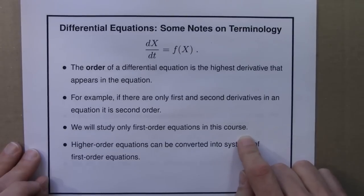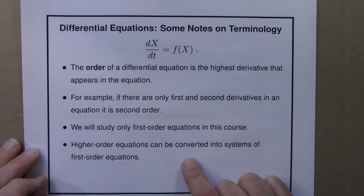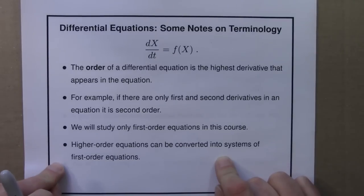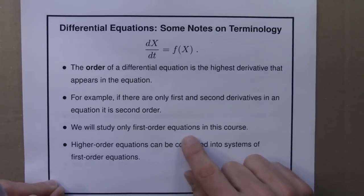At first, this might seem like a limitation, because there's some very important second order equations. Newton's law of motion, perhaps the most important for mechanics and chaos, is a second order equation. However, it's possible to convert a second order equation into a system of two first order equations. That's not immediately obvious, and we're not going to actually do that in this course. We could talk about it in the forums if people are interested. But the main point is that we'll only study first order equations, but that's not limiting us in any way.